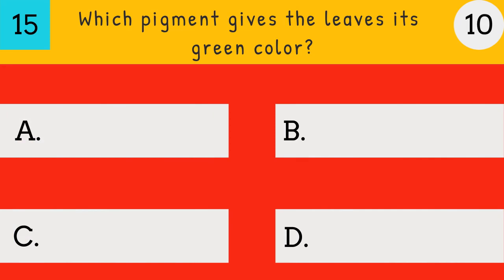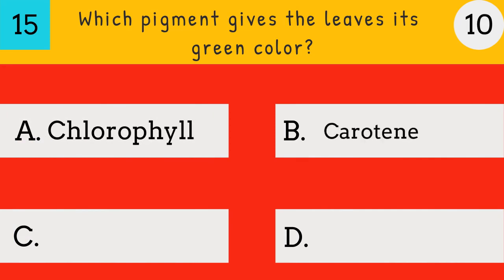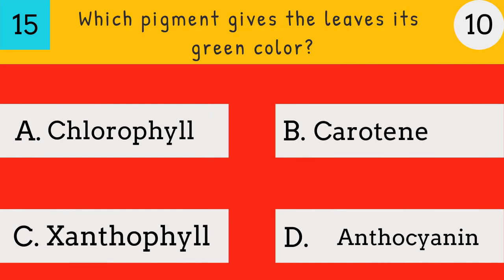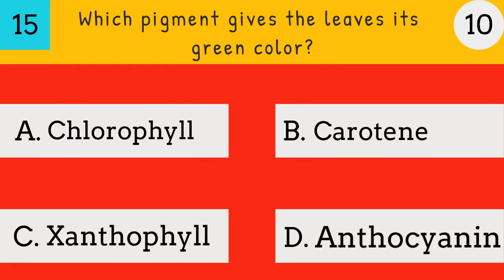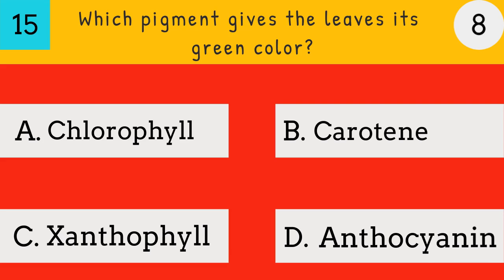Which pigment gives the leaves their green color? Chlorophyll, Carotene, Xanthophyll, Anthocyanin. Answer: Chlorophyll. Chlorophyll gives the leaves its green color.